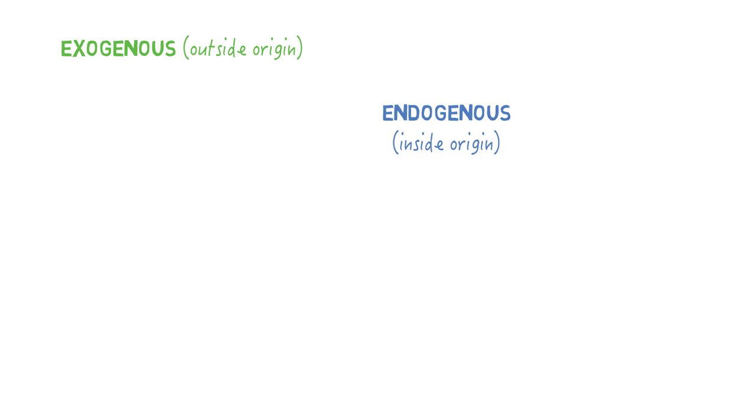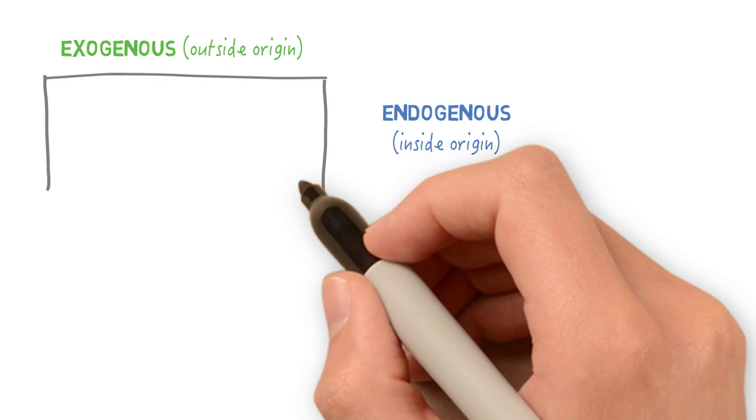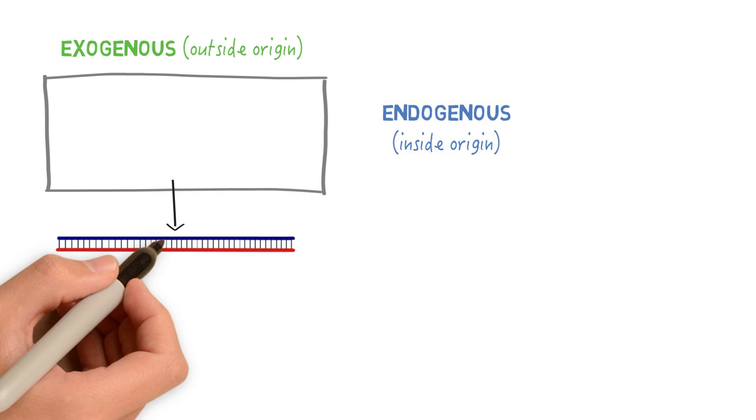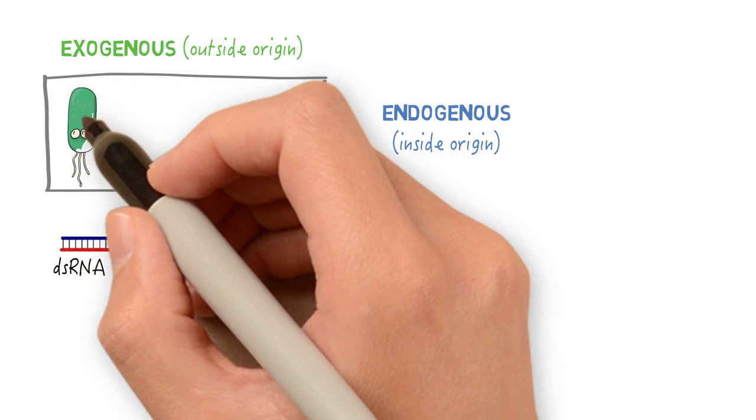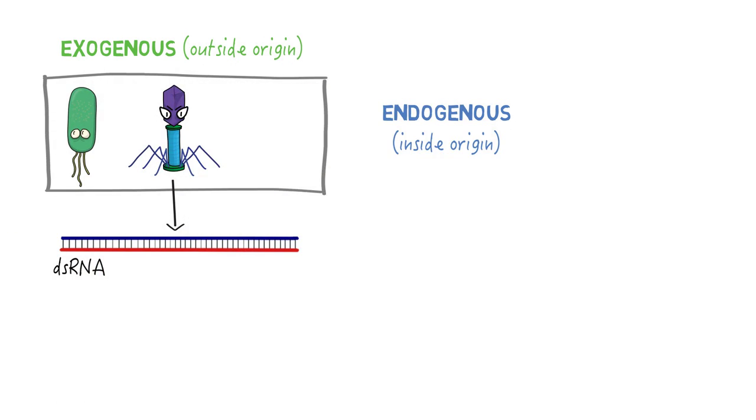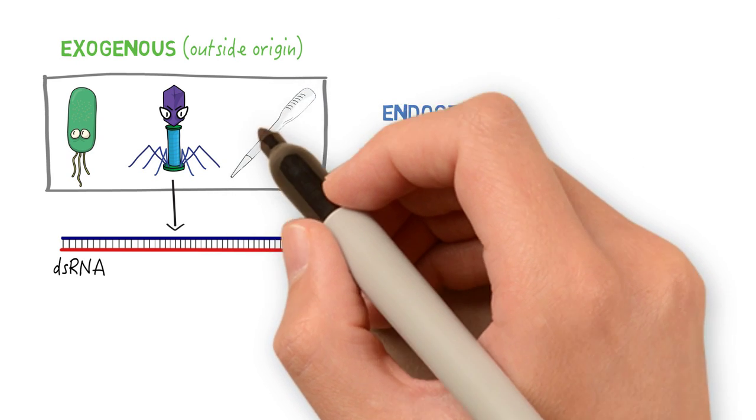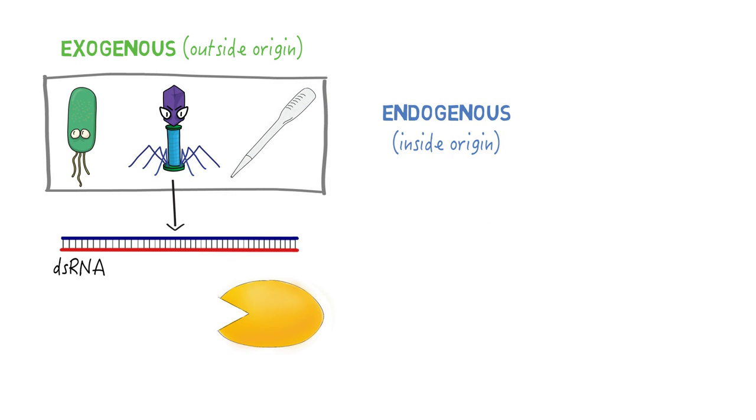In the exogenous pathway, dsRNA that begins the process is introduced by either bacteria or viruses that produce dsRNA or are introduced synthetically in a lab. Once it's in the cytoplasm, an enzyme called Dicer cuts the double-stranded RNA into smaller fragments, around 20 base pairs.